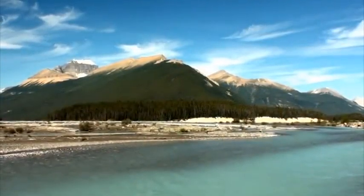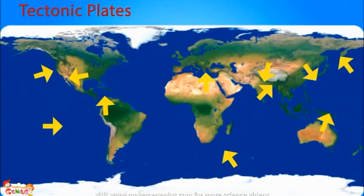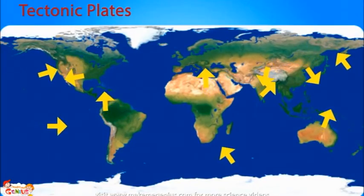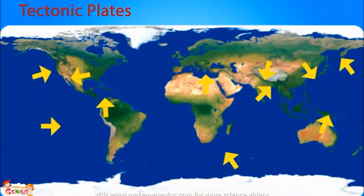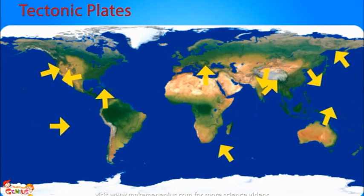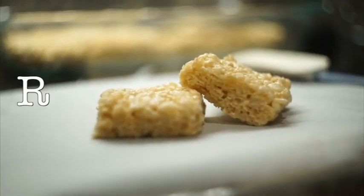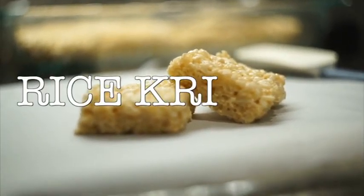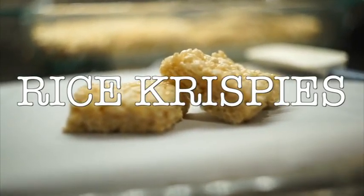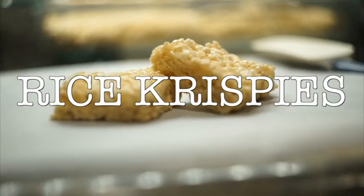At the boundaries of the plates, various deformations occur as the plates interact. One way to demonstrate these plate movements is through a model that can be made out of Rice Krispies.